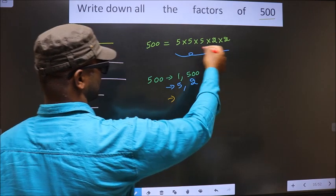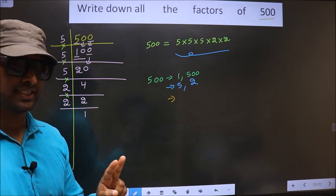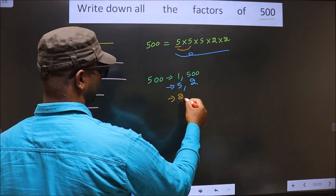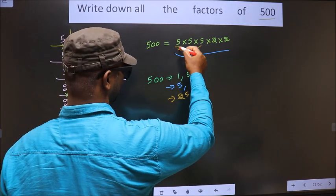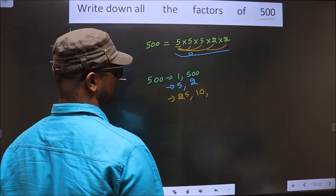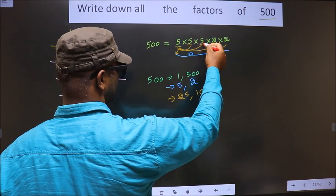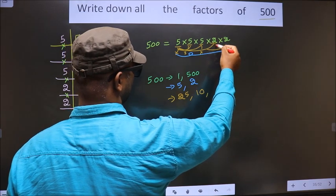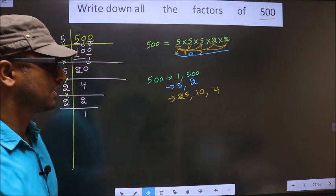Now take combinations of 2 numbers from the prime factors. Fix 5 and combine with another 5 — you get 25. Combine 5 with 2 — you get 10. Fixing the other 5s gives the same results. Now fix 2 and combine with another 2 — you get 4. No other combination is possible.